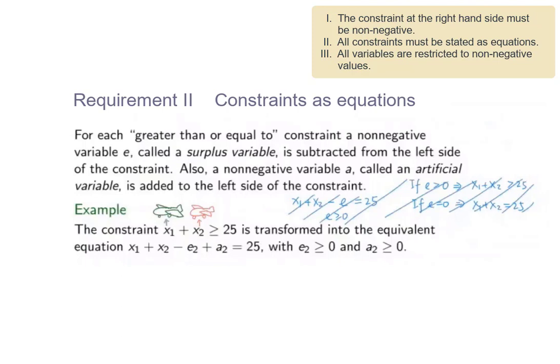However, on top of this surplus variable, we also have to add a non-negative variable A to the left-hand side. This is due to a technical reason when we perform the simplex method — roughly speaking, if we do not add this variable A, there will be complications in working out the simplex method. Thus, the variable is called an artificial variable and is denoted with the letter A. You may feel uncomfortable with this artificial variable, but later we will notice that it will have a value equal to zero when we reach the optimum point.